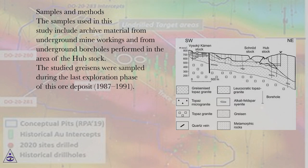Samples and Methods. The samples used in this study include archive material from underground mine workings and from underground boreholes performed in the area of the Habštejn stock. The studied greisens were sampled during the last exploration phase of this ore deposit, 1987 to 1991.